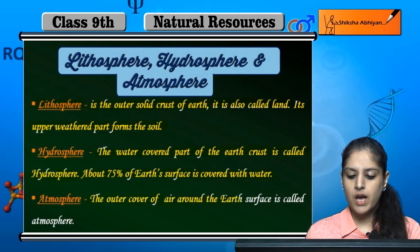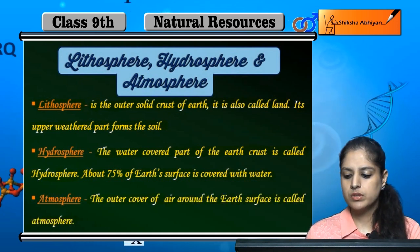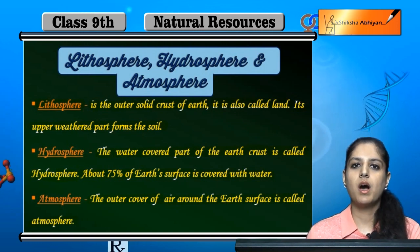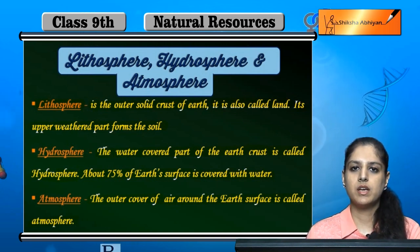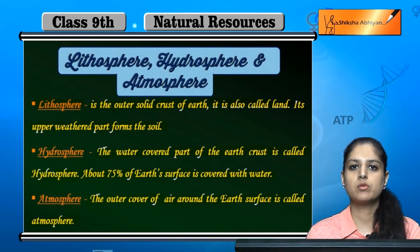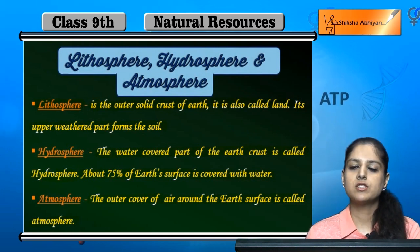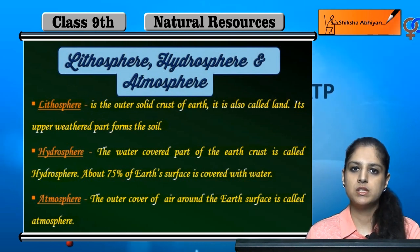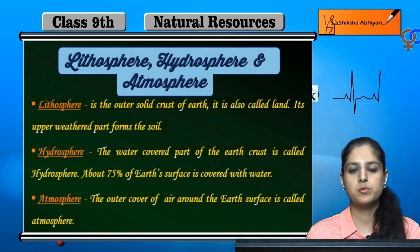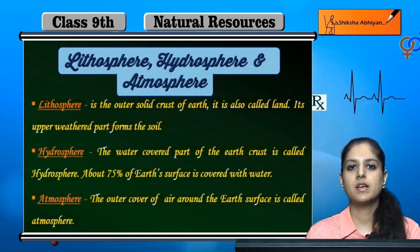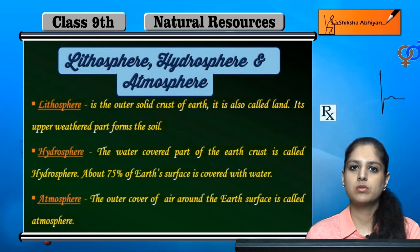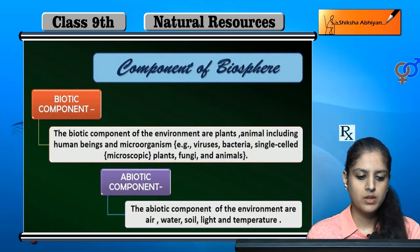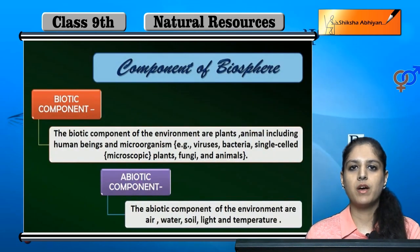Now, the atmosphere. The outer cover of air around the earth's surface is called the atmosphere. We get oxygen from it, and there are many important gases present in it: carbon dioxide, nitrogen, and some other noble gases.